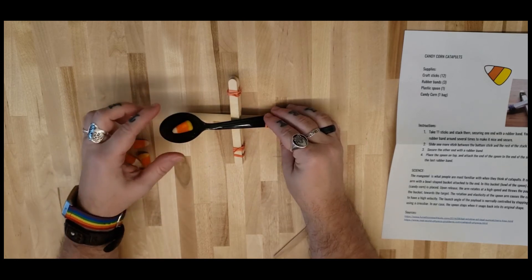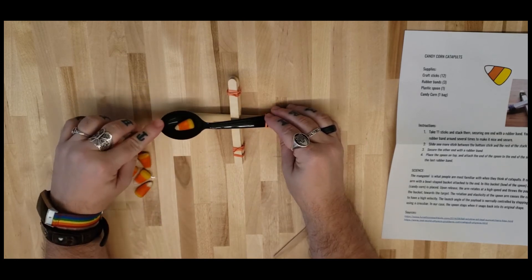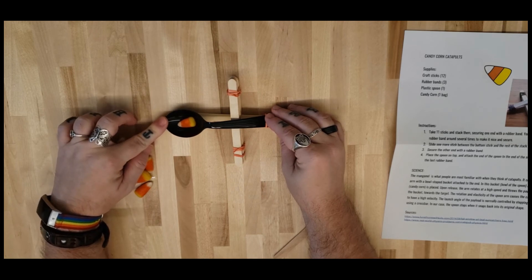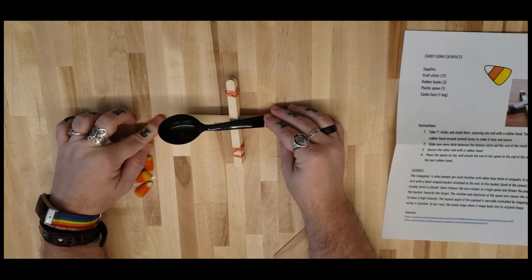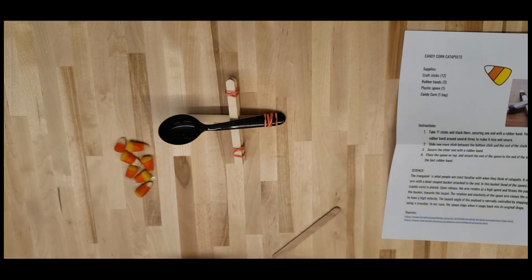All right, we load up the payload into the bucket. We apply the force and there you go. That's your candy corn catapult.